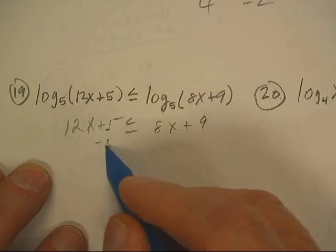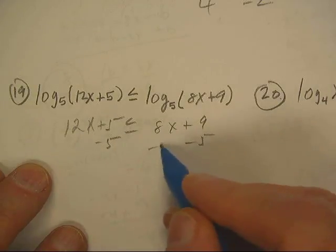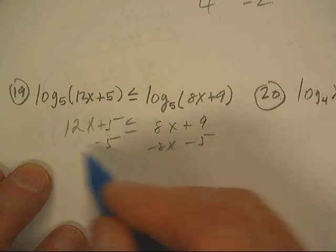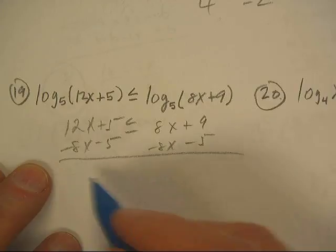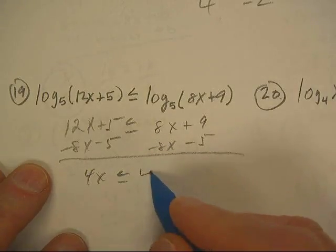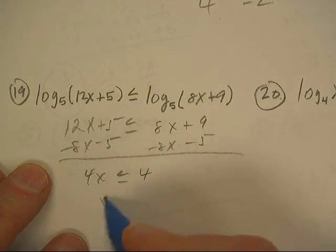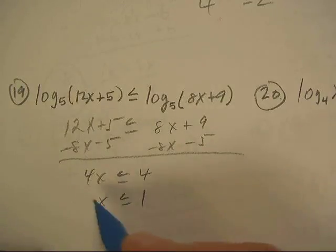So let's see, let's subtract 5, subtract 8x. 4x is less than 4, so x is less than 1.